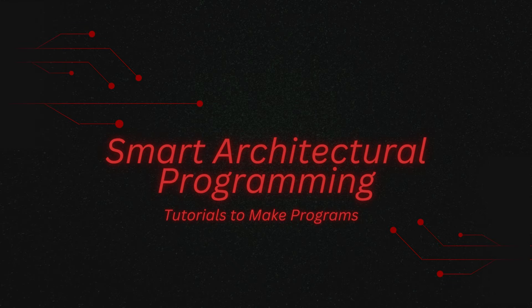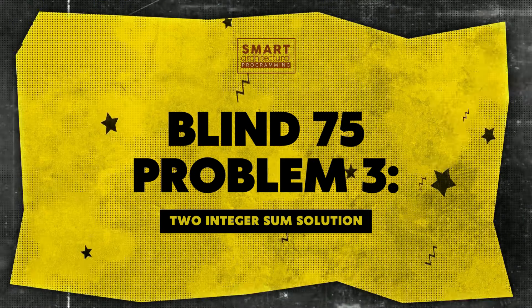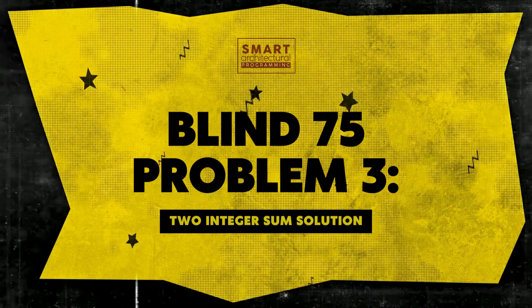Welcome to Smart Architectural Programming. Today, we're diving into an exciting topic, Blind 75 Problem 3, Two Integer Sum Solution.